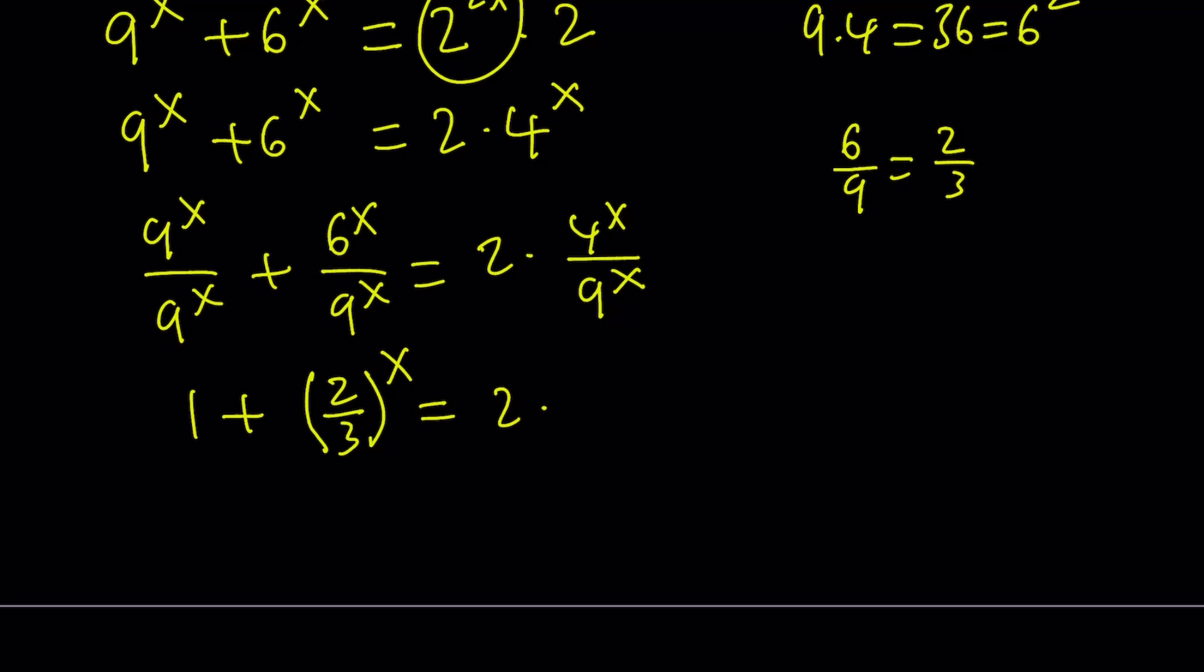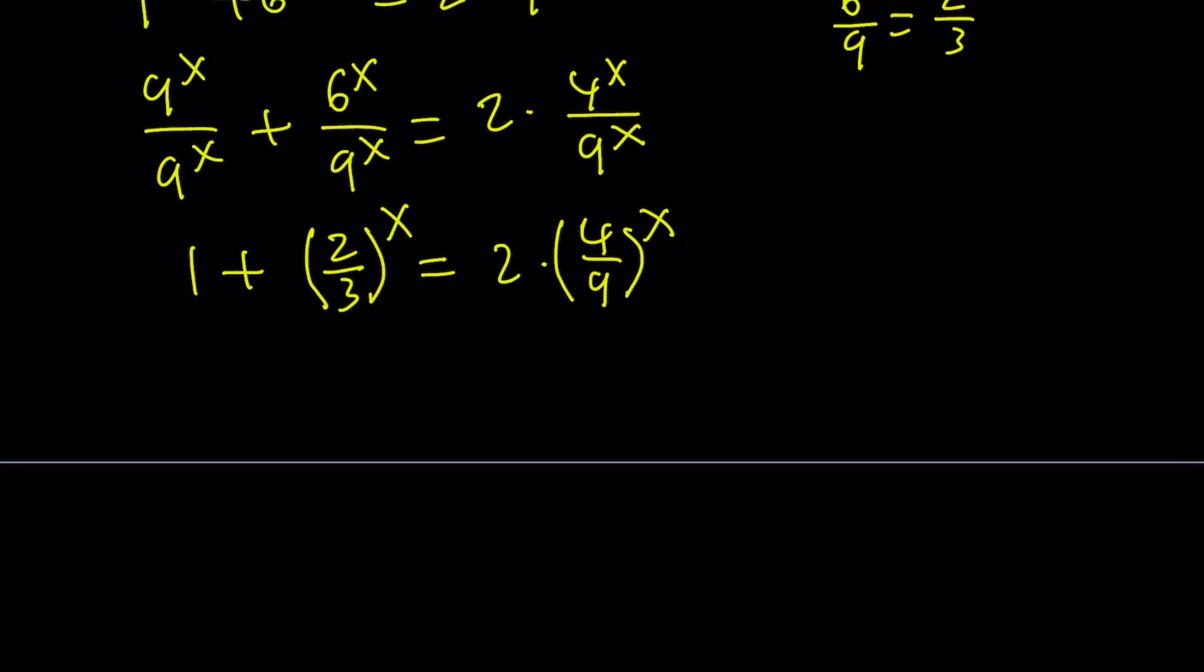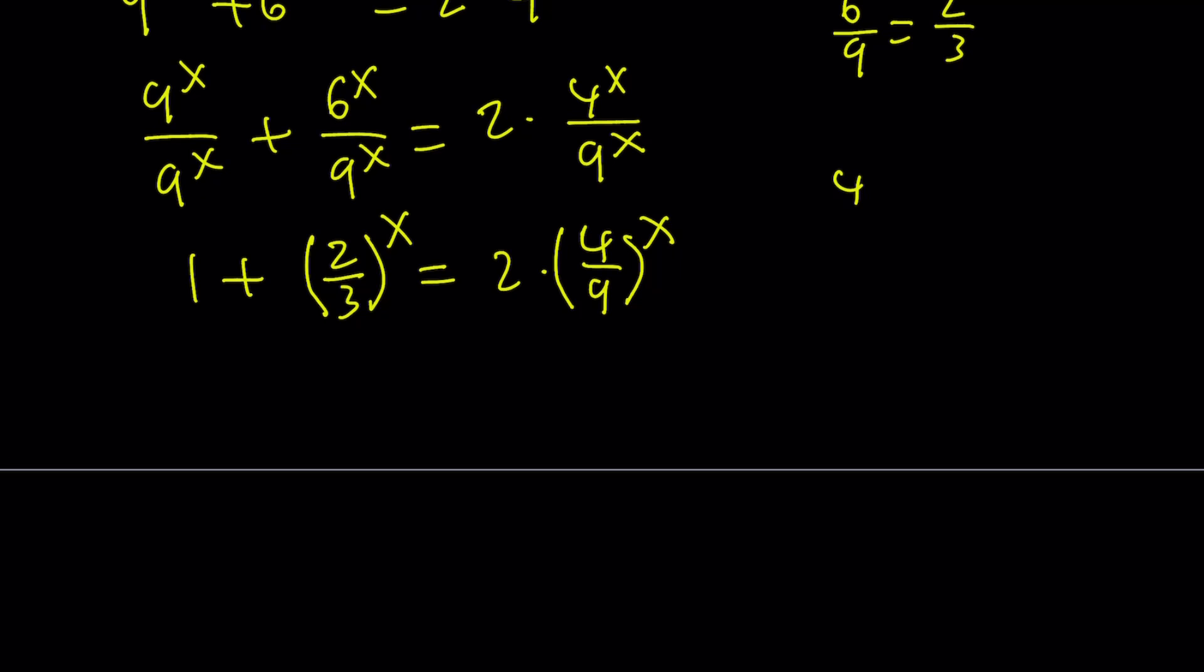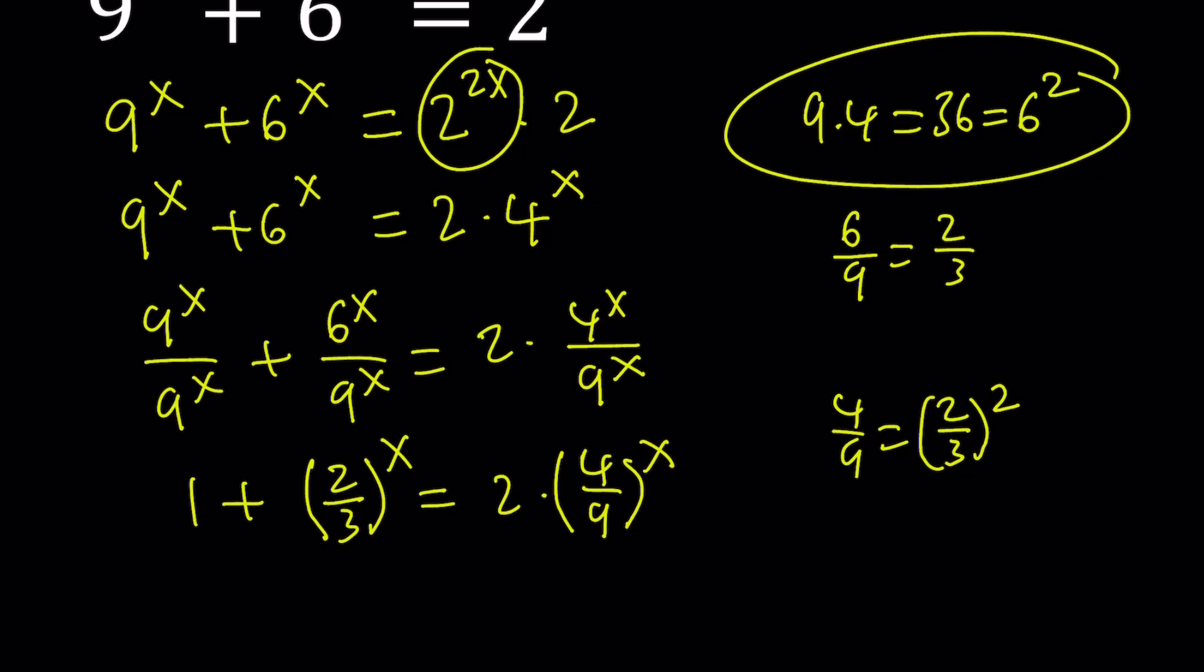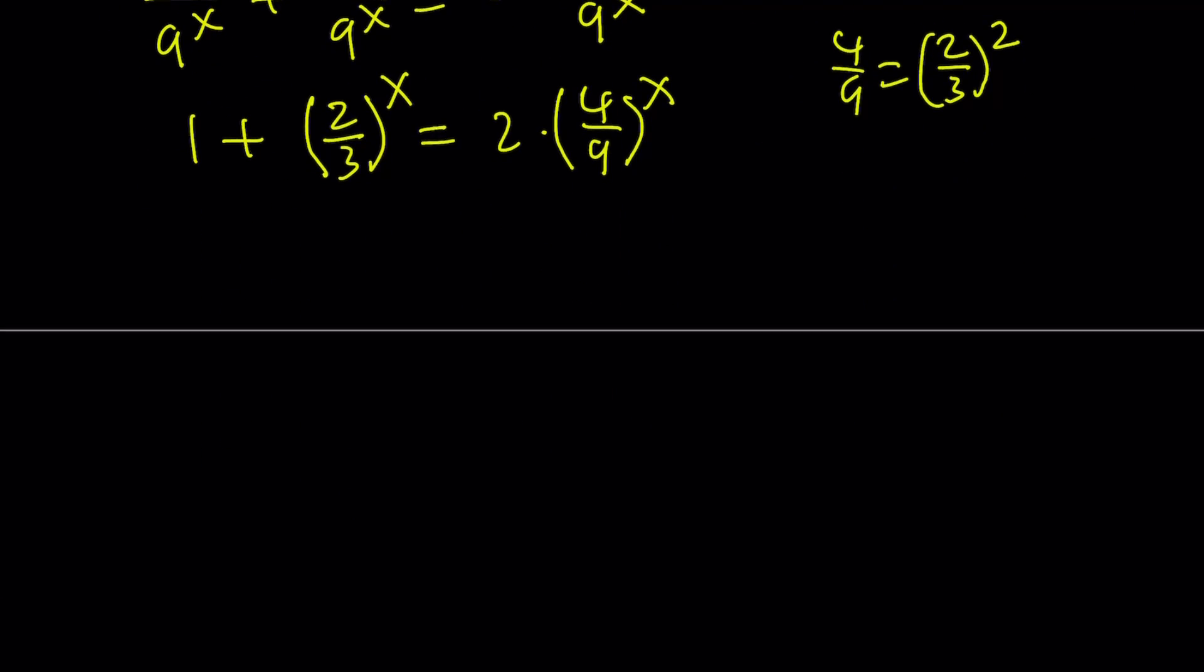And this is 2 times 4 over 9 to the power x. What's the relationship between 4 over 9 and 2 thirds? 4 over 9 is 2 thirds squared. Awesome. The reason why this happens is because of this. Make sense?